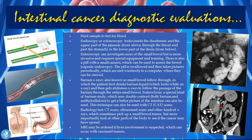The capsule endoscopy, also called the pill cam, is swallowed and takes images of the small bowel as it travels through the GI tract. Barium X-rays, also known as a small bowel follow-through, involve the patient drinking barium liquid (which appears white on X-ray) followed by a series of abdominal X-rays tracking its passage through the small bowel. CT scans, ultrasound, and other radiographical testing can also detect small bowel tumors and assess whether cancer has spread. An MRI may be ordered if liver involvement is suspected, which can occur with carcinoid tumors.